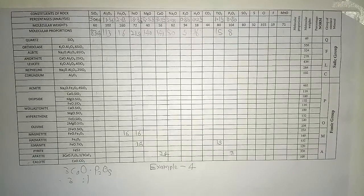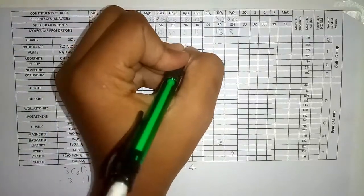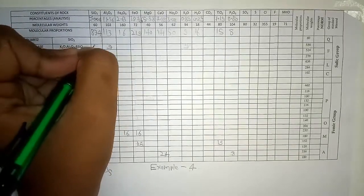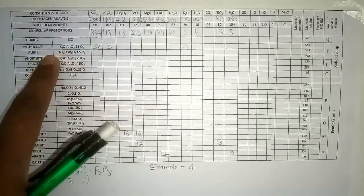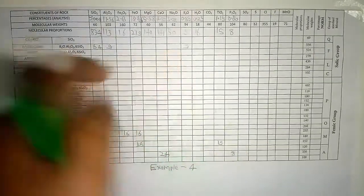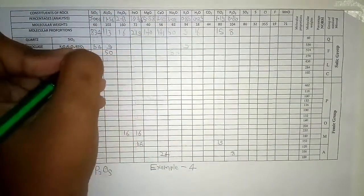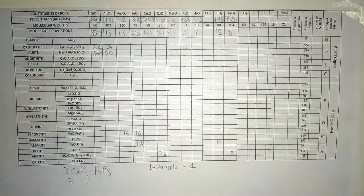For orthoclase: we have 9 K2O. The ratio is 1:1:6, so we use 9 K2O, 9 Al2O3, and 9×6 = 54 SiO2. For albite: we have 50 Na2O, so 50 Na2O, 50 Al2O3, and 50×6 = 300 SiO2 are used.